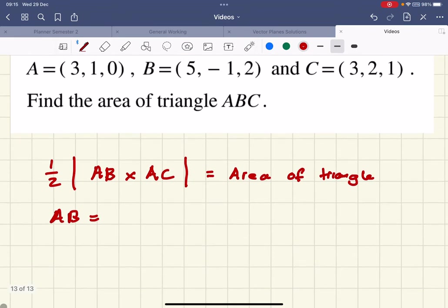So AB will be B minus A, so 5 take away 3, which is 2. Minus 1 take away 1 is minus 2, and 2 take away 0 is 2.